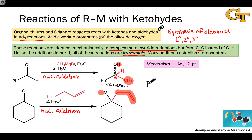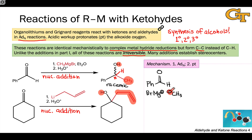Let's use the first reaction as a context to explore the mechanism. The first thing I like to do when dealing with Grignard reagents or organolithiums is to draw the alternative resonance form of the organometallic reagent. In the case of a Grignard, we break the carbon-magnesium bond toward carbon, forming a carbanion and MgBr⁺. This makes it clear that the carbon is a good nucleophile, prompting us to look for an electrophilic atom — here the carbonyl carbon of the aldehyde. In the first step, the nucleophilic methyl anion adds to the carbonyl carbon in an ADN elementary step.